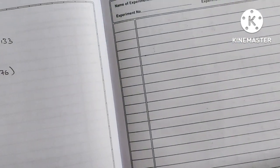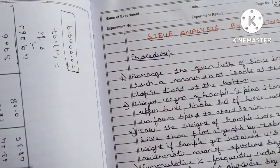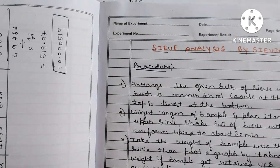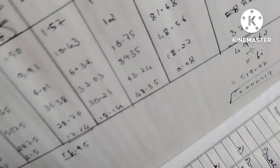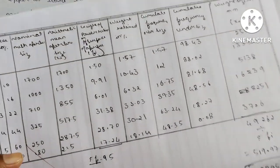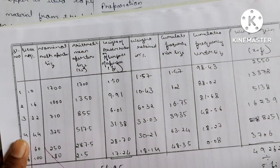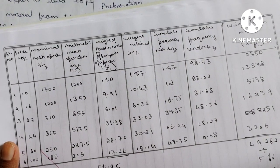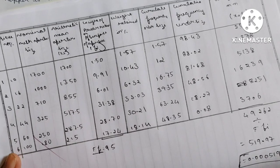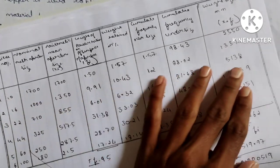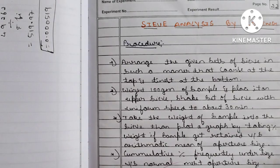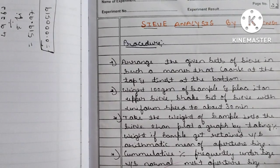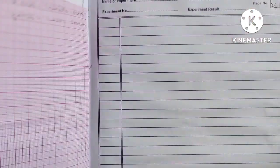Next is sieve analysis — also very important. The tabular column is the same as ball mill, except the last column is missing. For sieve analysis, three graphs are mandatory to draw.